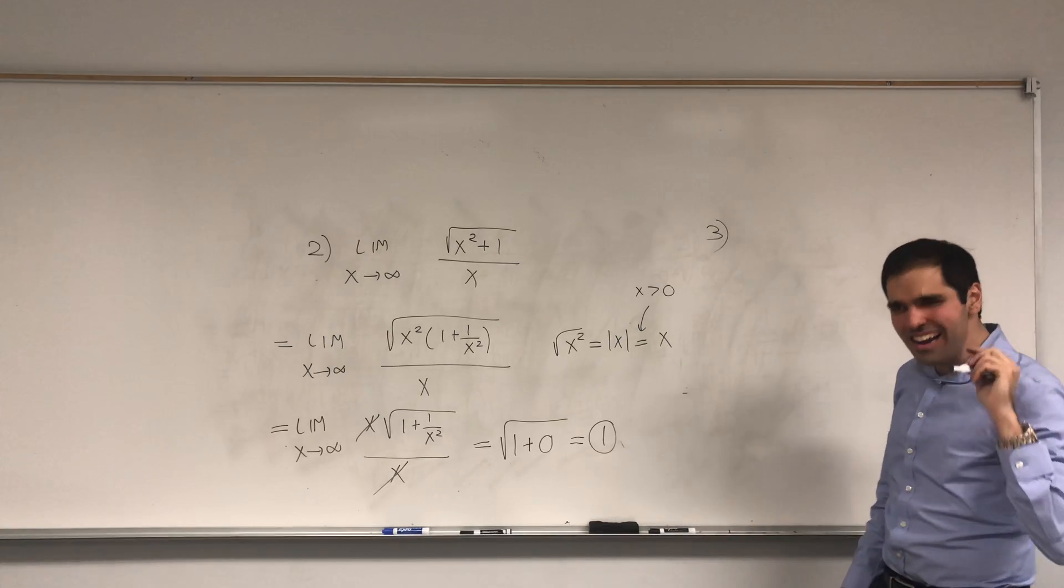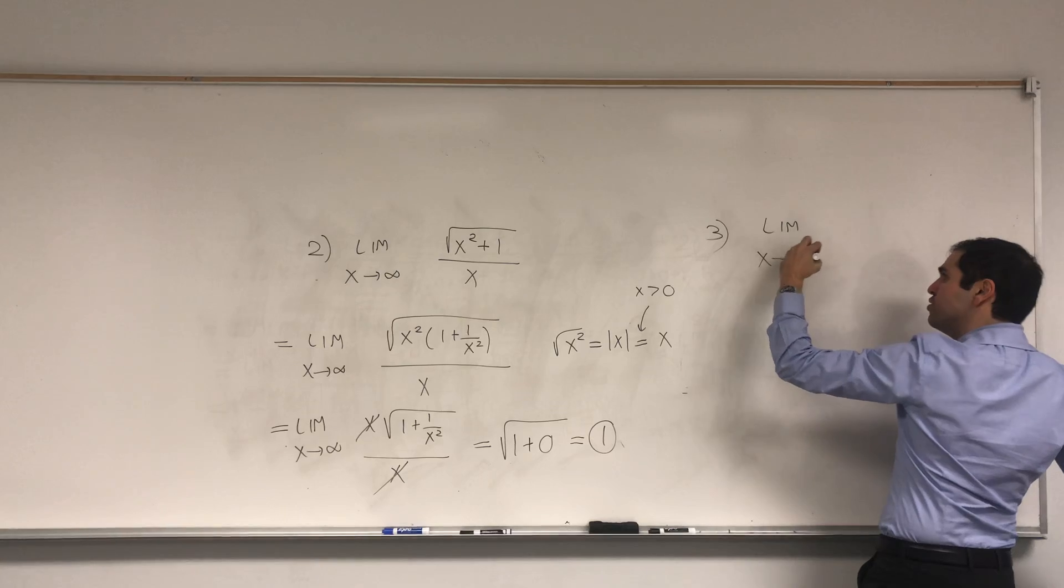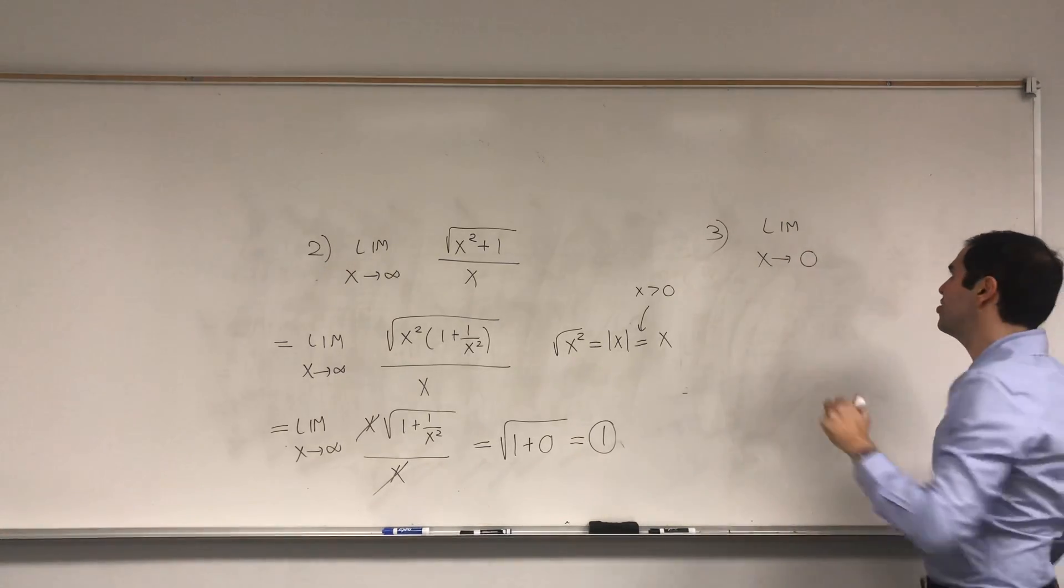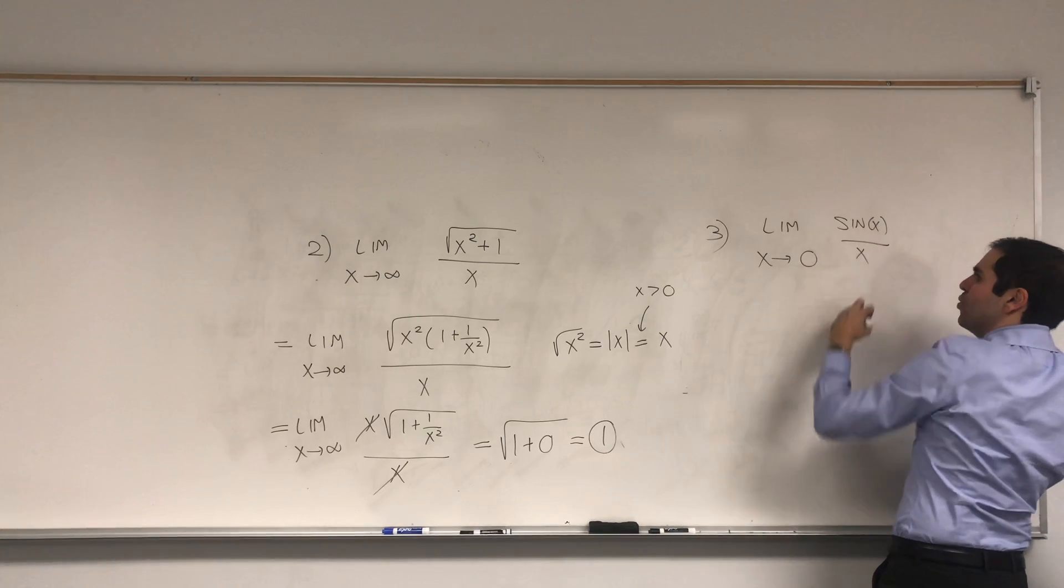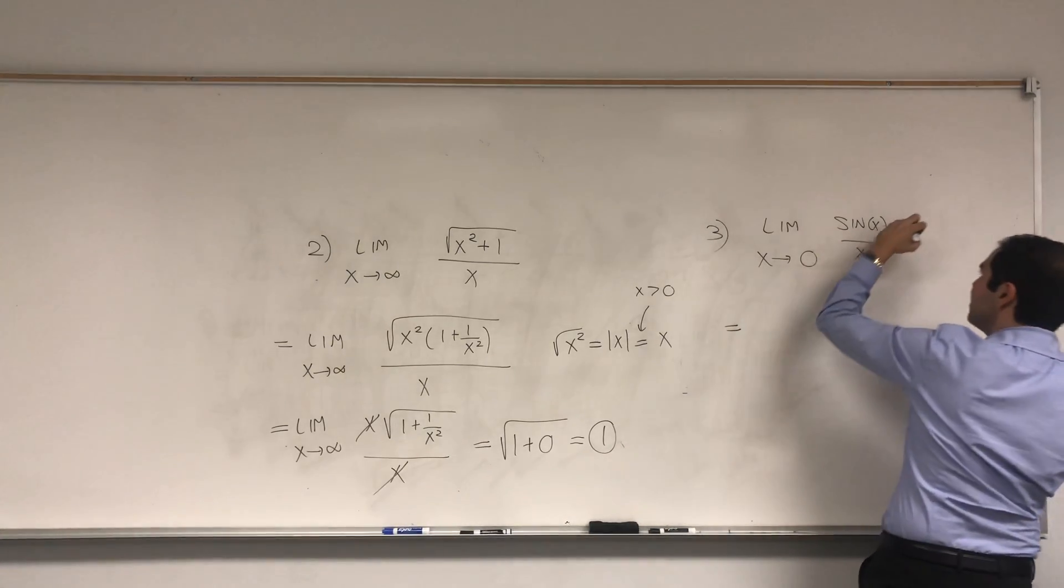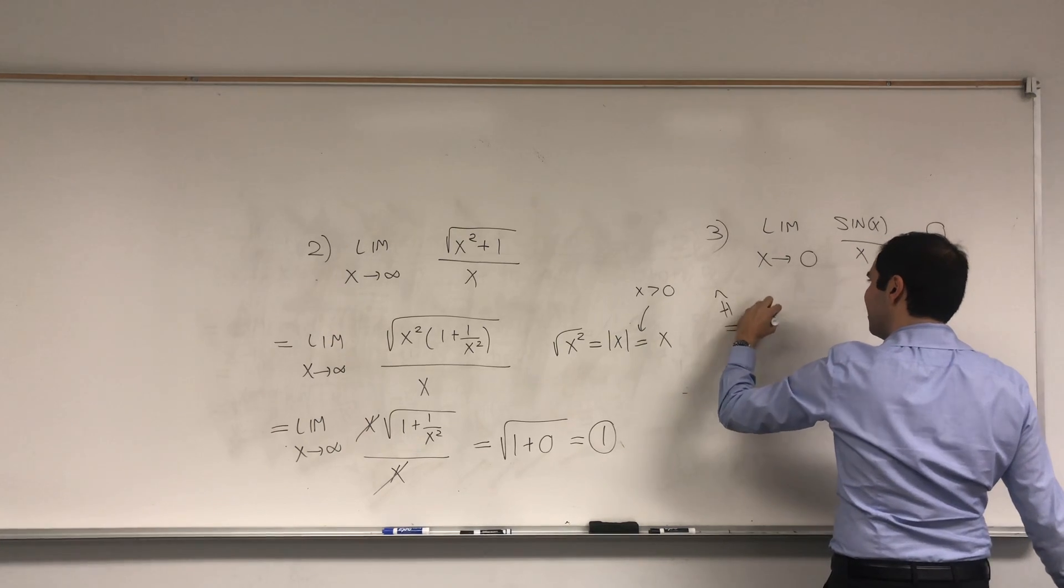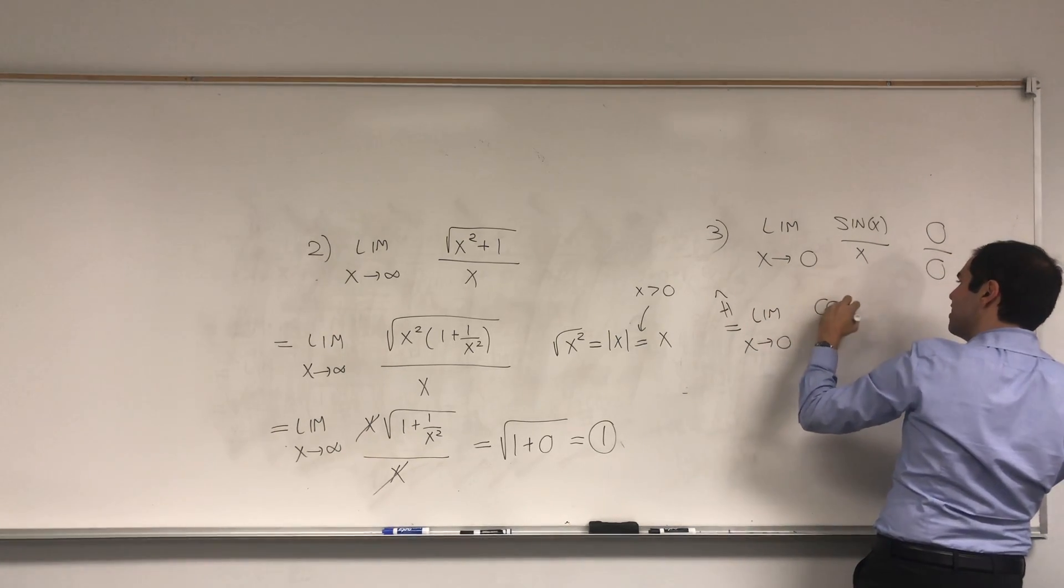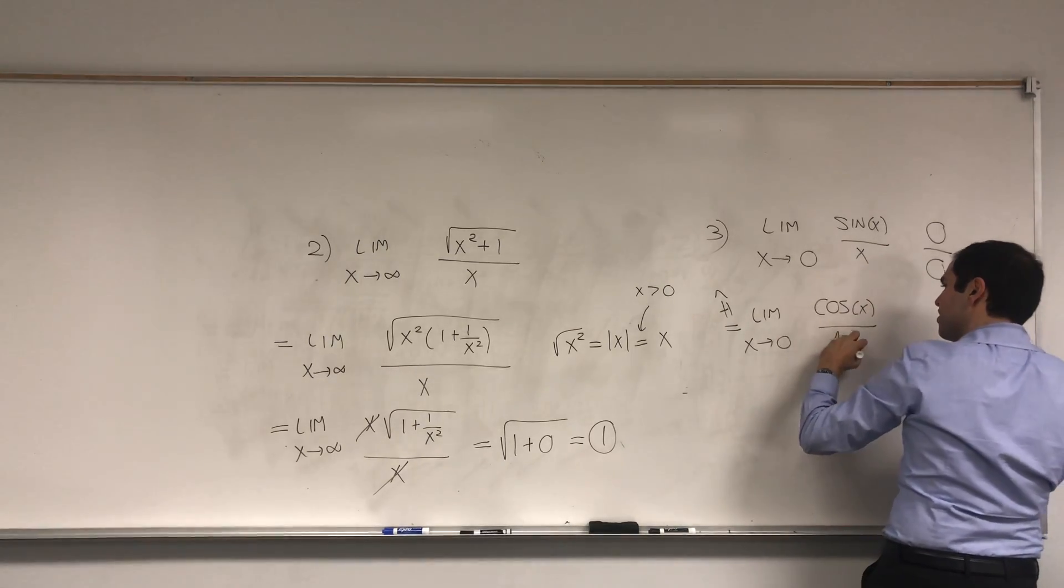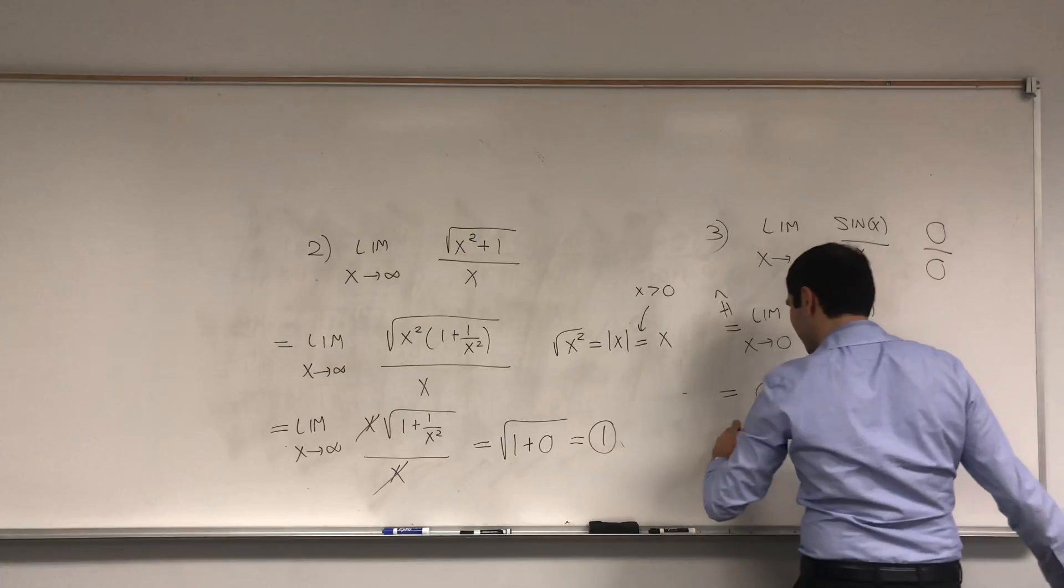Here's a proof under quotation mark that sine of x over x goes to 1. Well, this is of the form 0 over 0, so let's L'Hopital it. Let's limit x goes to 0 of cosine of x over 1. And that's just cosine of 0, which is 1.